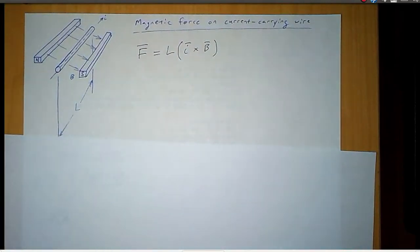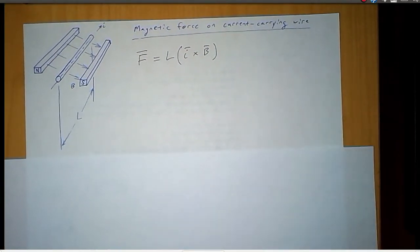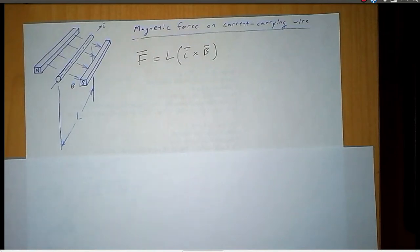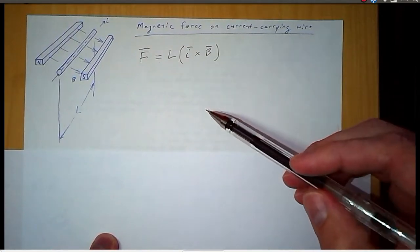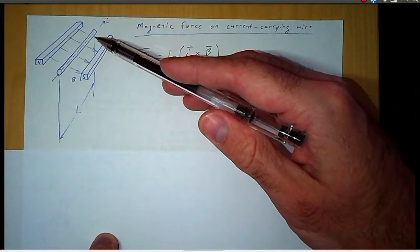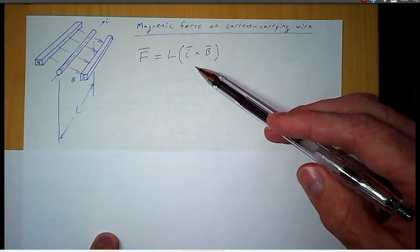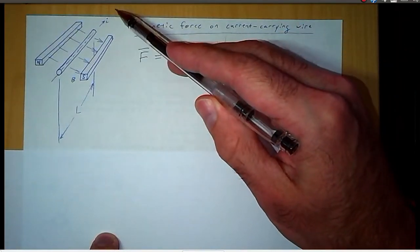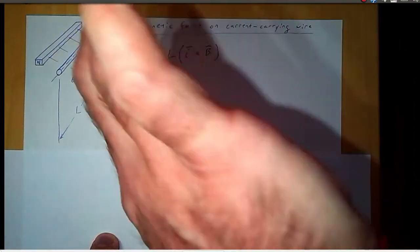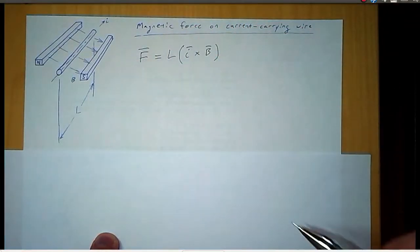So in the situation shown in this picture, which direction is the force going to be? You can pause the video and think about it for a second. In this case, the force is going to be down. The force is in the direction of the cross product of the current and the magnetic field. Current goes this way, magnetic field goes this way, so the cross product is going to point down according to the right hand rule.